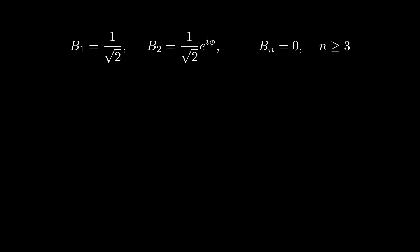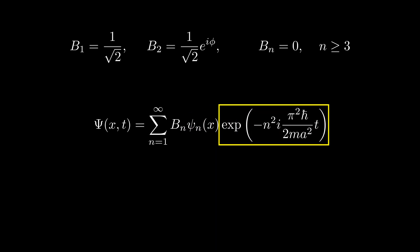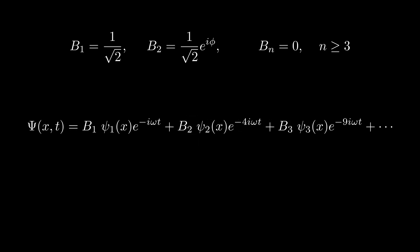Now let's move from the initial wave function to its time-dependent form. The general solution is given by a summation, where B_n represents the expansion coefficients, ψ_n(x) are the stationary states or eigenfunctions of the infinite potential well, and the exponential term describes the time evolution of each energy eigenstate. To make our calculations cleaner, let's define a constant omega as π²ℏ/(2ma²). Substituting the values of B₁ and B₂ that we found earlier, since B_n is 0 for all n ≥ 3, our summation simplifies significantly, leaving only the first two states contributing to the wave function.